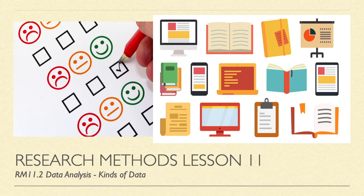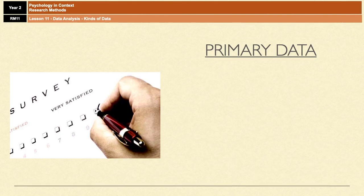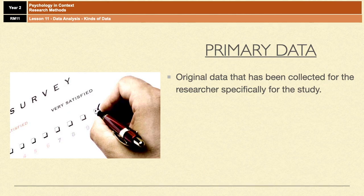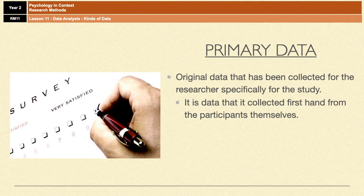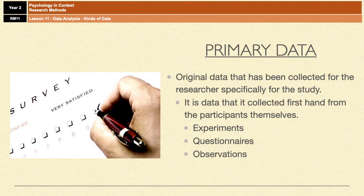Let's make a start. Primary data refers to original data that has been collected by the researcher specifically for that study. So it's data that is collected firsthand from the participants themselves. You get primary data through experiments, questionnaires, or observations where the data is collected there and then from the participants by the researcher. It is firsthand data.